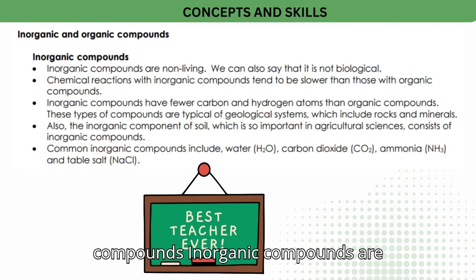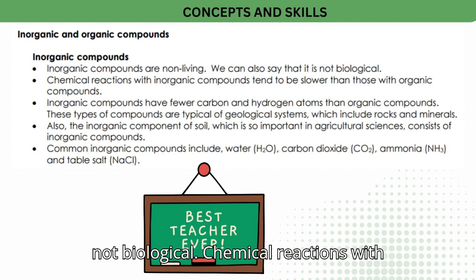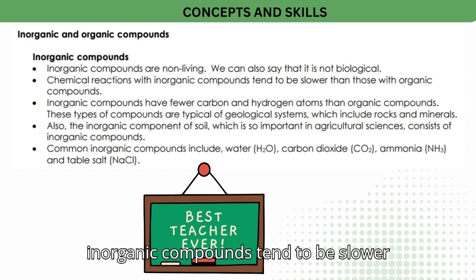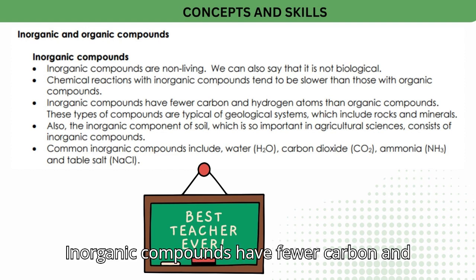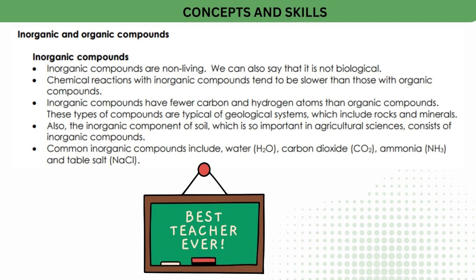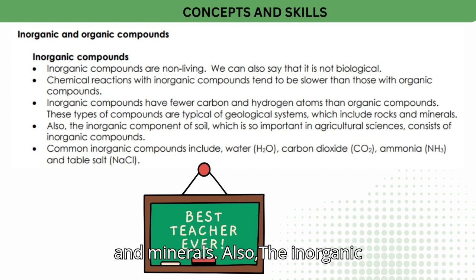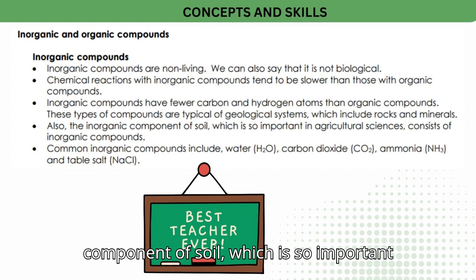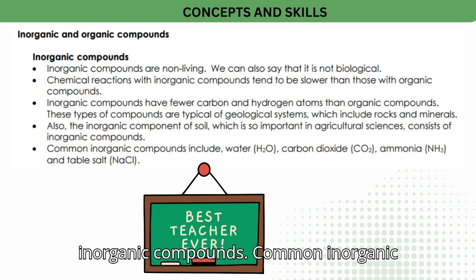Inorganic compounds are non-living; we can also say that they are not biological. Chemical reactions with inorganic compounds tend to be slower than those with organic compounds. Inorganic compounds have fewer carbon and hydrogen atoms than organic compounds. These types of compounds are typical of geological systems, which include rocks and minerals. Also, the inorganic component of soil, which is so important in agricultural sciences, consists of inorganic compounds.